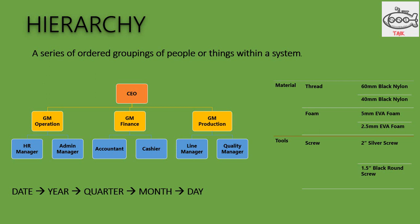Hierarchy is a series of ordered grouping of people or a thing within a system. Normally, in an organization, the structure will be in a hierarchy way: the CEO, and below them there are GM Operations, GM Finance, GM Production, and below them there are HR managers, admin manager, account and cashier line manager, quality manager, and below them there are other workers.